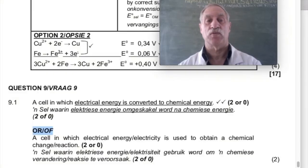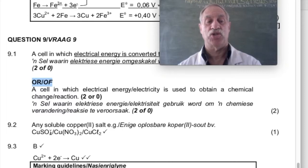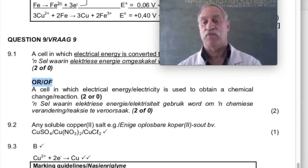From the memo: any soluble copper(II) salt, for example CuSO₄, copper nitrate, or copper chloride. So after memorizing what an electrolytic cell is, memorize copper sulfate, copper nitrate, copper chloride — because they are soluble copper salts with a valency of 2. Even if you don't know what that means, memorize that.